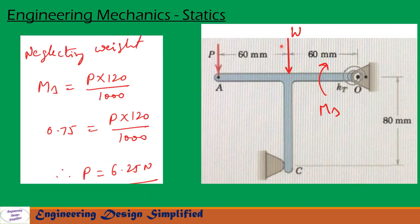In Case B we are neglecting weight W, so the moment due to weight W is removed from the equation. The equation becomes M_S = P × (120/1000). Substituting the values and simplifying, P equals 6.25 N. This is the force P required to break the contact at point C when weight is neglected.